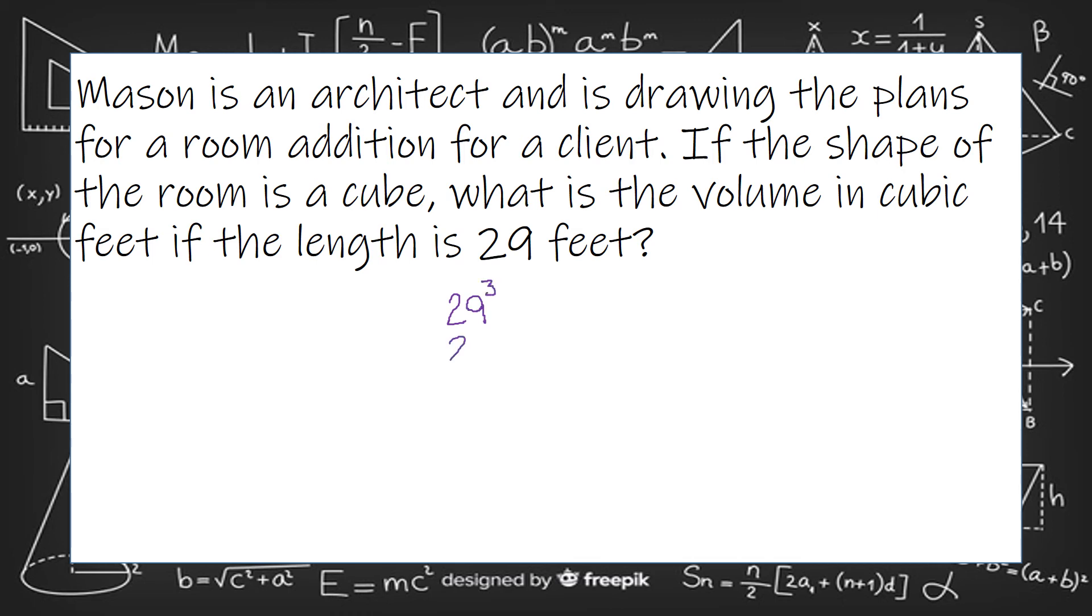So we're going to take the 29 and cube it. What that means is 29 times 29 times 29. This exponent is a 3, so I multiplied 29 where I multiplied the base right here. 3 times whatever that exponent set.